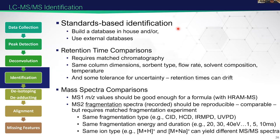When we do standards-based identification, we build a database or use an external one — most often a hybrid of both. For retention time, we can only compare when chromatography is matched: same column dimensions, sorbent type, flow rate, solvent compositions, and column temperature. Even then, retention times can drift. With mass spectra comparisons, the mass-to-charge values for the precursor should be quite good for getting a formula. Fragmentation spectra should be fairly reproducible, with the caveat that you can only compare the same fragmentation type, energies, durations, and ion type — a sodium adduct may fragment differently to a protonated form.